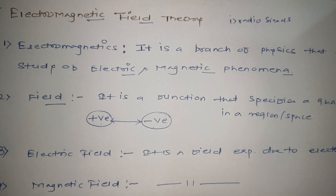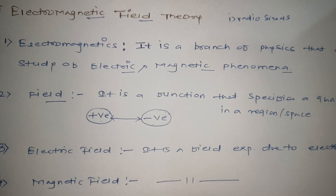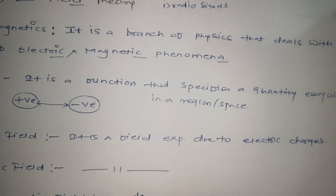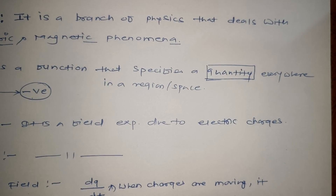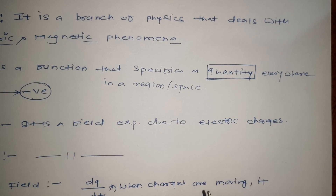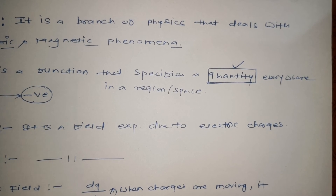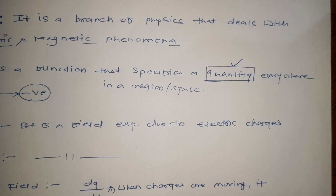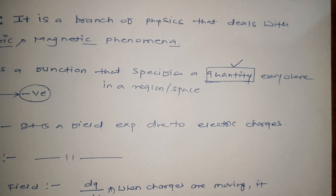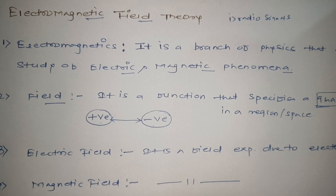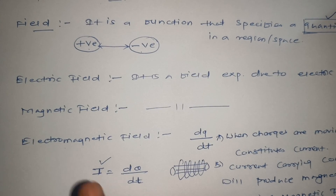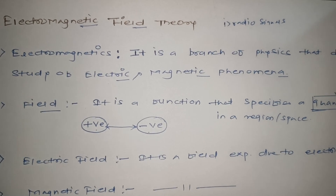So here we are having two concepts: electric field and magnetic field. Recall that a field is basically a function that specifies a quantity everywhere in a region or space. Now, how many types of quantities can be found? We are having two types of quantities: one is called a scalar quantity, and one is called a vector quantity. In the next lecture, we will start our discussion with types of quantities. I hope you understood this particular point — how electric fields are generated, how magnetic fields are generated, and how we arrive at electromagnetic field. This was our introductory session. Thank you.